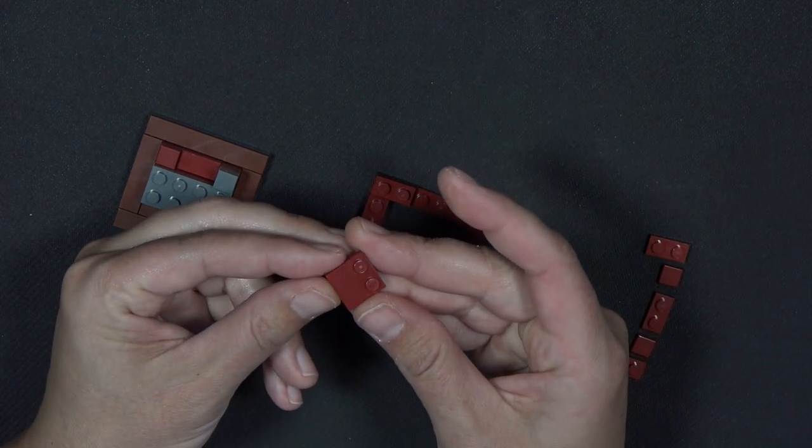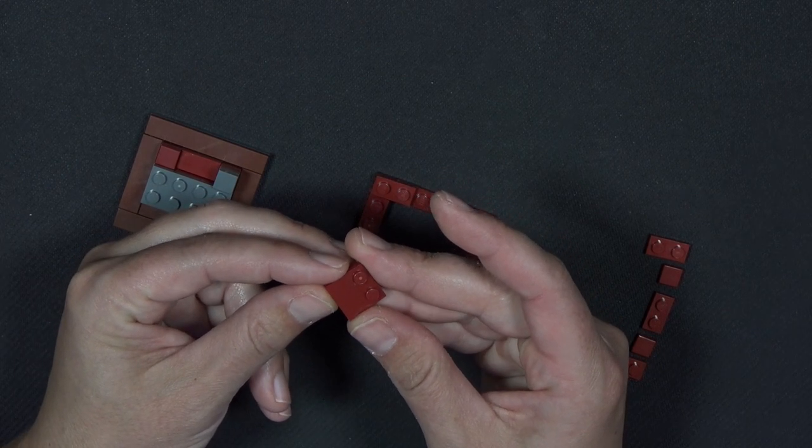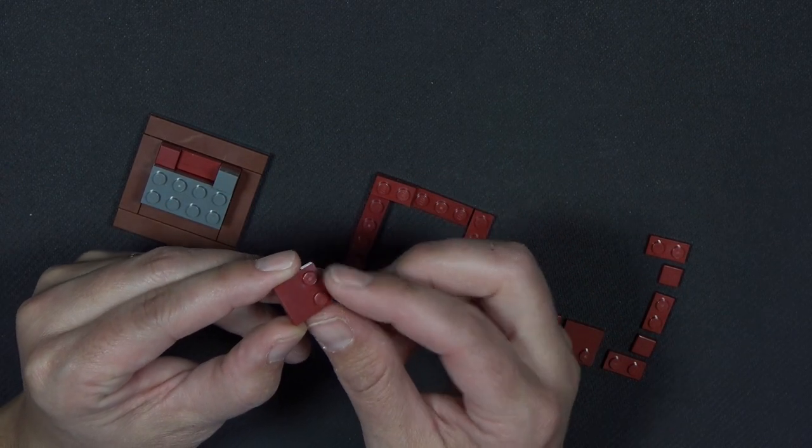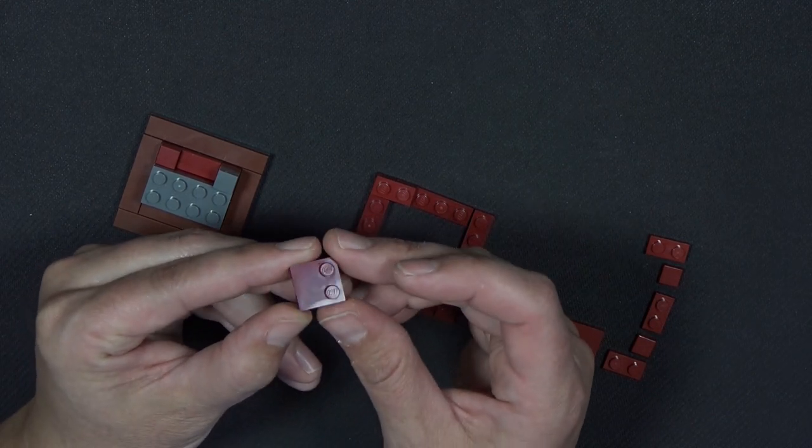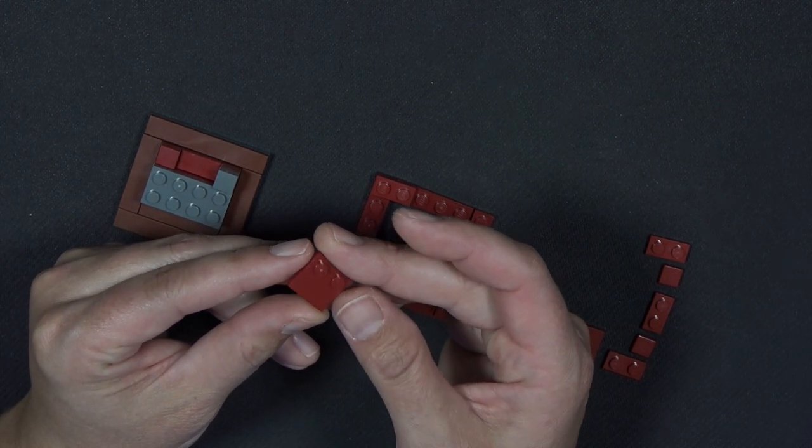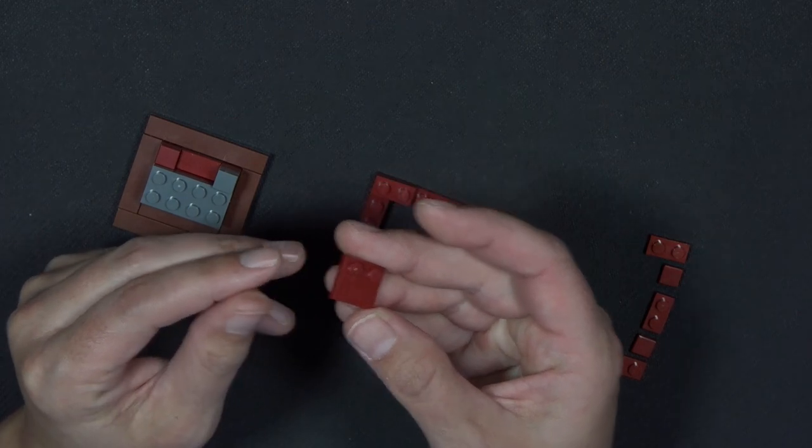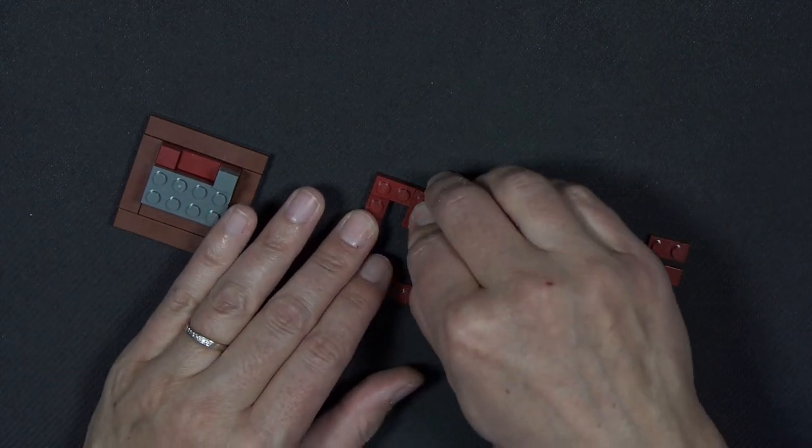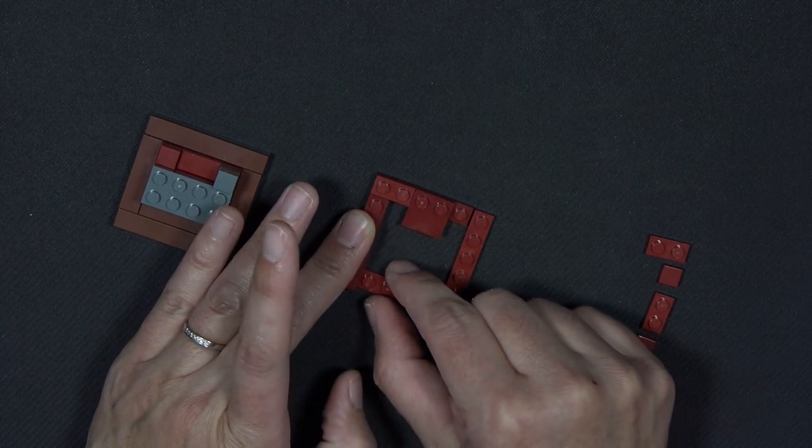This is a 2x2 tile modified. It has two studs here, and then this part here is smooth like a tile. And I'm going to put the tile portion inside the box. The studs are sitting here on the outside.